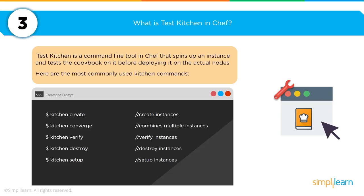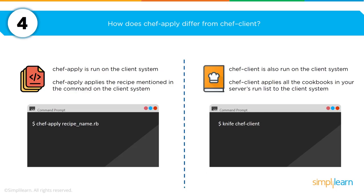Chef comes with a series of tools that allow it to function effectively. One tool you'll be asked about is Test Kitchen — a command line tool that allows you to test out your cookbook before deploying it to a real node. Key commands include: `kitchen create` to create an instance, `kitchen destroy` to destroy an instance after creation, and `kitchen converge` to combine multiple instances.